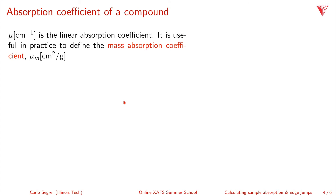Mu, which has units of inverse centimeters, is called the linear absorption coefficient. You can use this to define the mass absorption coefficient mu sub m, which has units of centimeters squared per gram — it's simply mu divided by the mass density of the material.